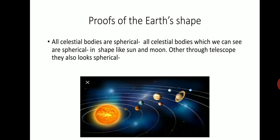Proofs of the Earth's shape. There are a number of theories to prove the shape of Earth as geoid or spherical. First, all celestial bodies are spherical. All celestial bodies like the Sun and Moon, which we can see through the naked eye, are spherical. Other planets, if you see through a telescope, also appear spherical in shape. So it is proved that Earth is spherical or geoid.